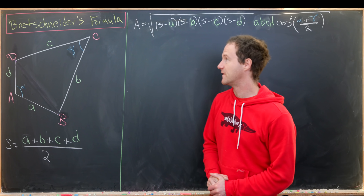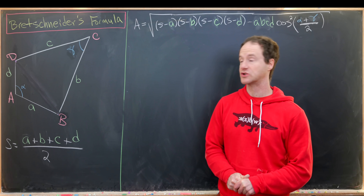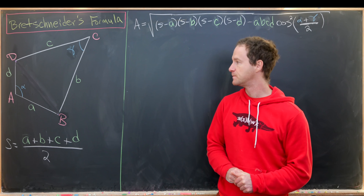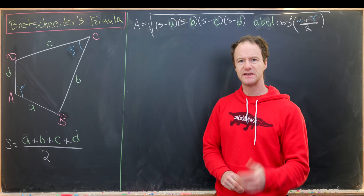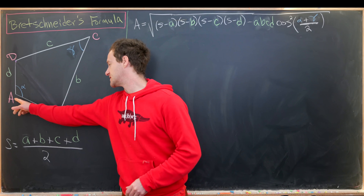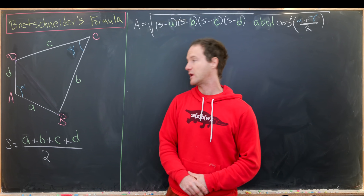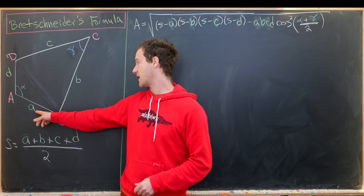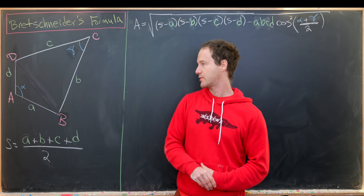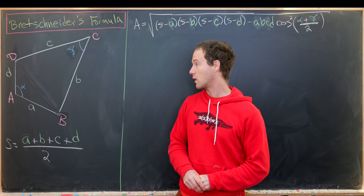Here I've got a nice formula for the area of a general quadrilateral. This is called Bretschneider's formula. For our quadrilateral, I've named the vertices A, B, C, D. Then we have side lengths a, b, c, d. Vertices are uppercase and side lengths are lowercase.